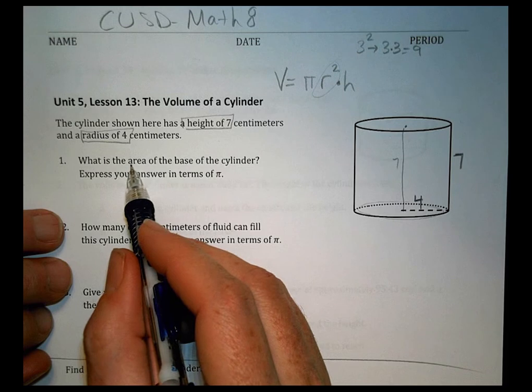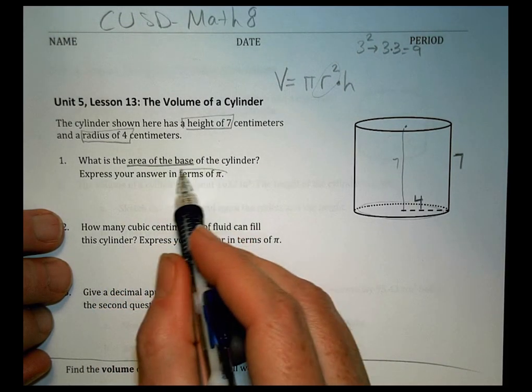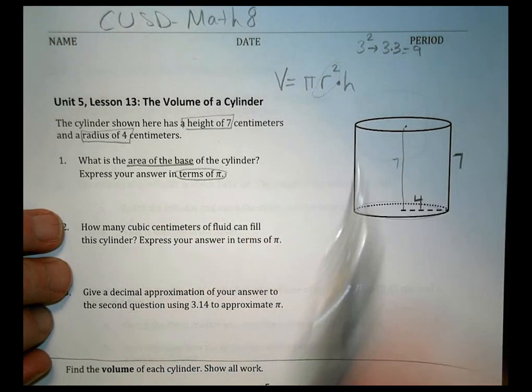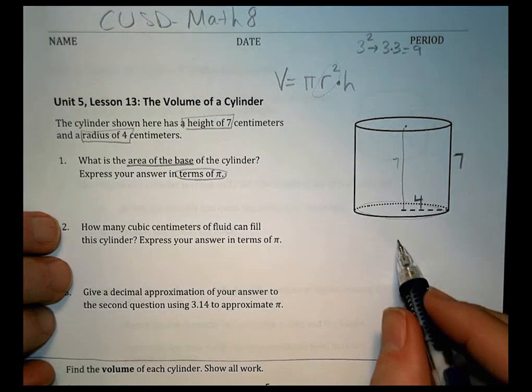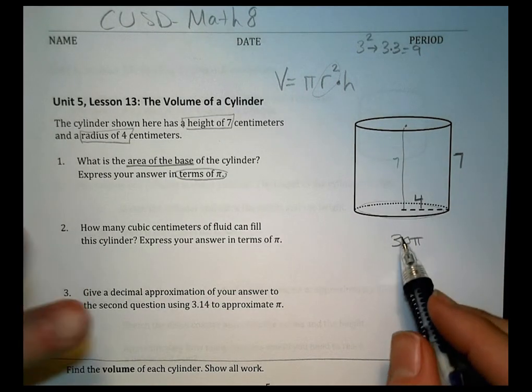First question says, what is the area of the base, and it says to go ahead and leave it in terms of pi. And again what that means is, you put your numbers in there, but don't worry about what pi is, leave it like, you could have an answer, it could be like 30 pi, that's okay. It's not 30 pi, but it could be like that, and that would be okay.